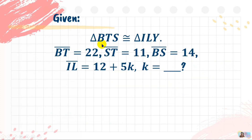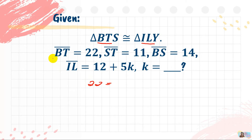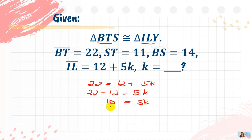The last item of the Average Round: triangle BTS is congruent to triangle ILY. Side BT is 22, side ST is 11, side BS is 14, and side IL equals 12 plus 5K. What is K? First, using the congruence statement, IL corresponds to side BT. So: 22 equals 12 plus 5K. Using the subtraction property of equality, subtract 12 from both sides: 10 equals 5K. Then using the division property of equality, divide both sides by 5: K equals 2.